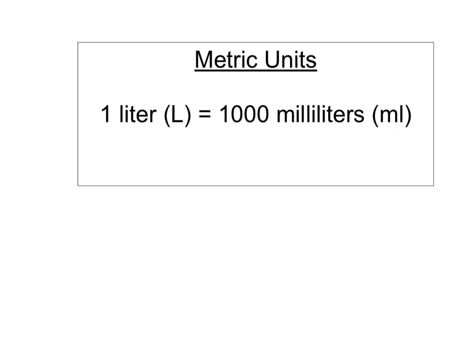This is the conversion you'll need to know for today's lesson: one liter equals 1,000 milliliters. You might remember from other conversion lessons with the metric system that when we do our multiplying and dividing, we're going to make use of the powers of 10.